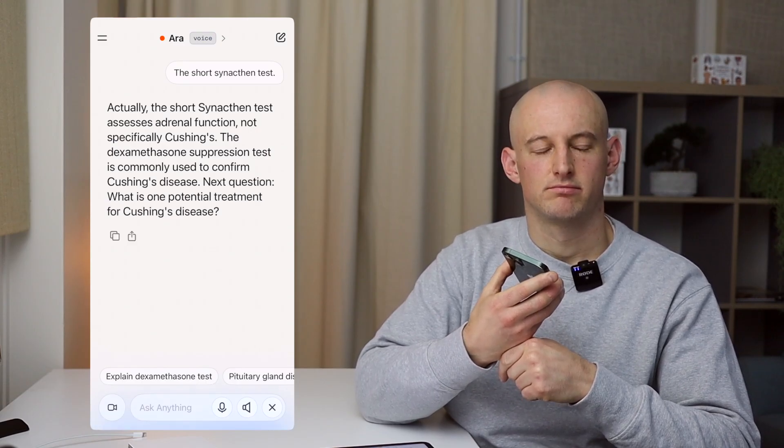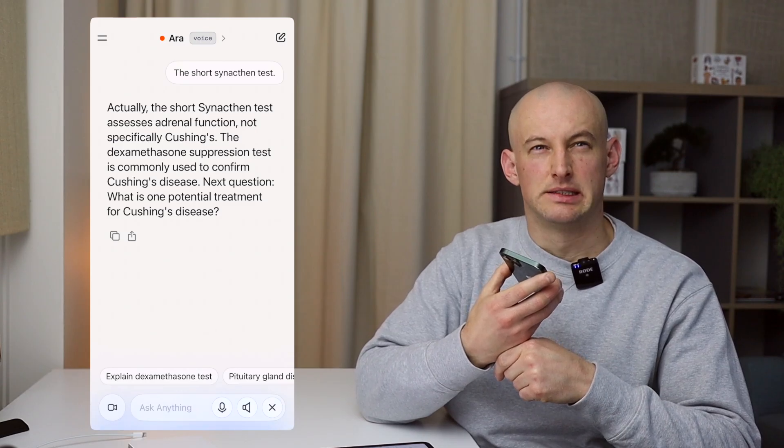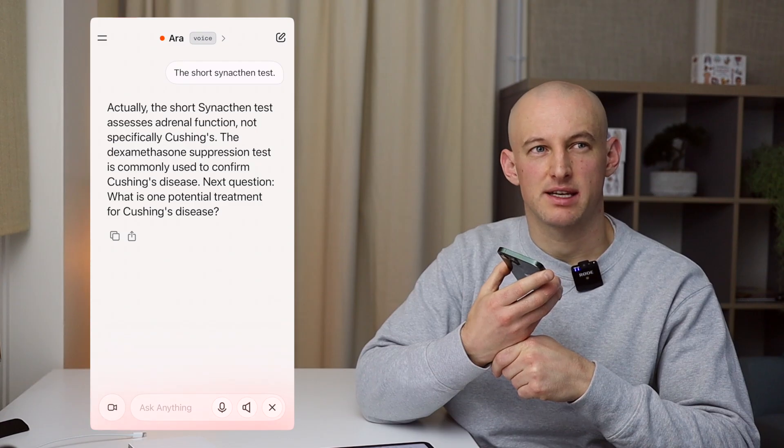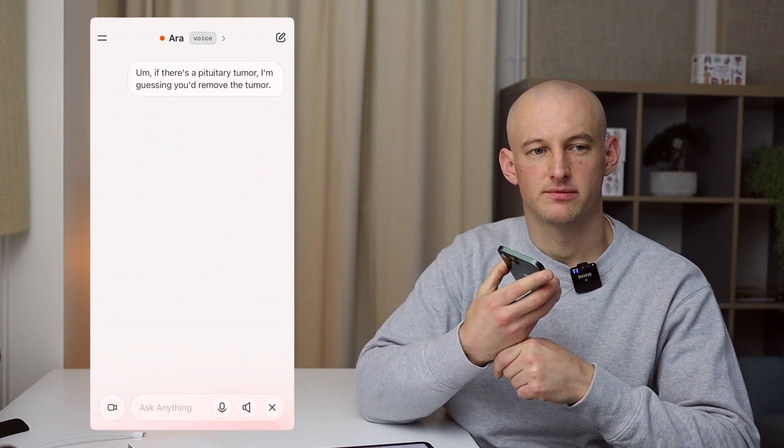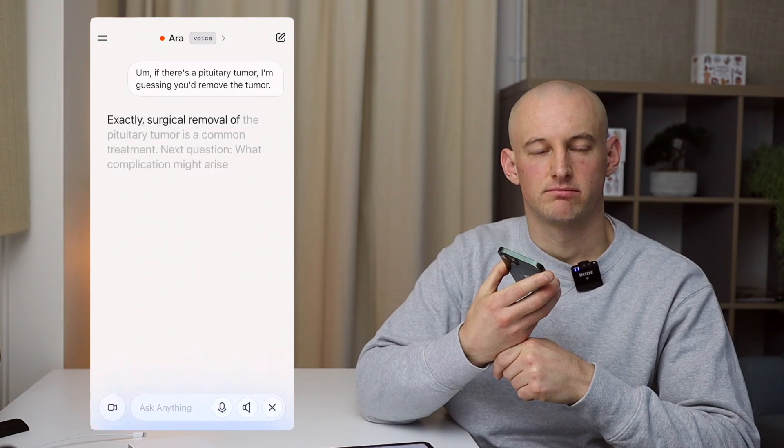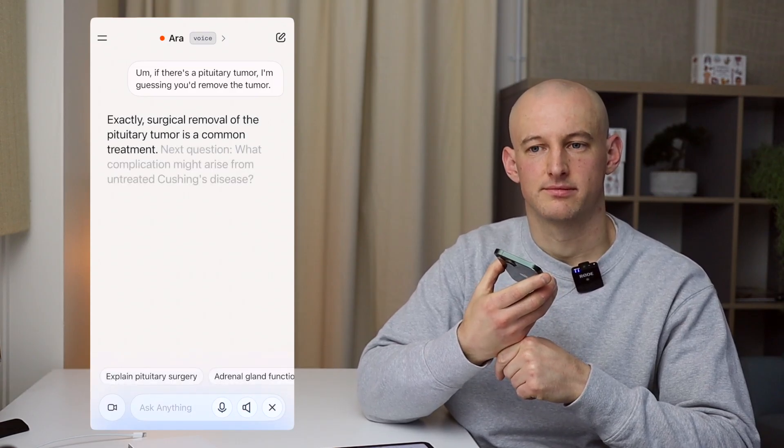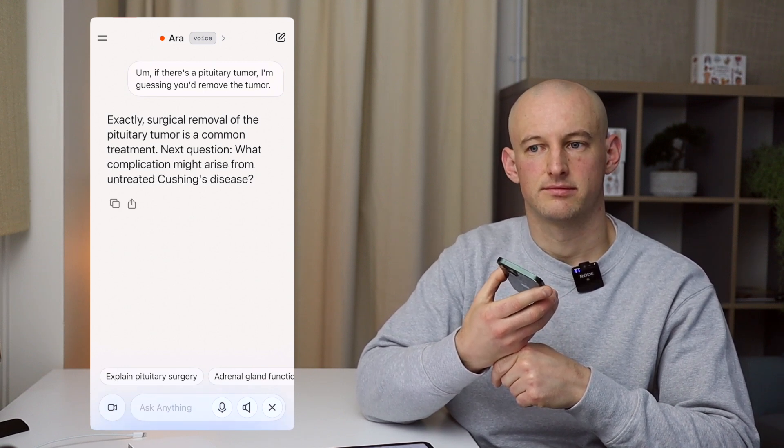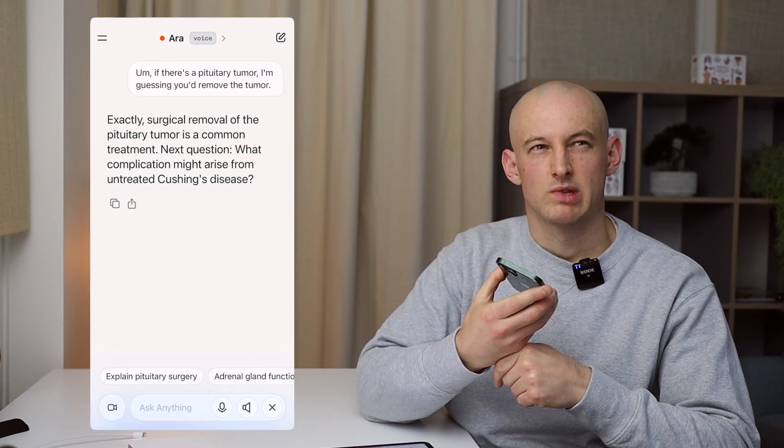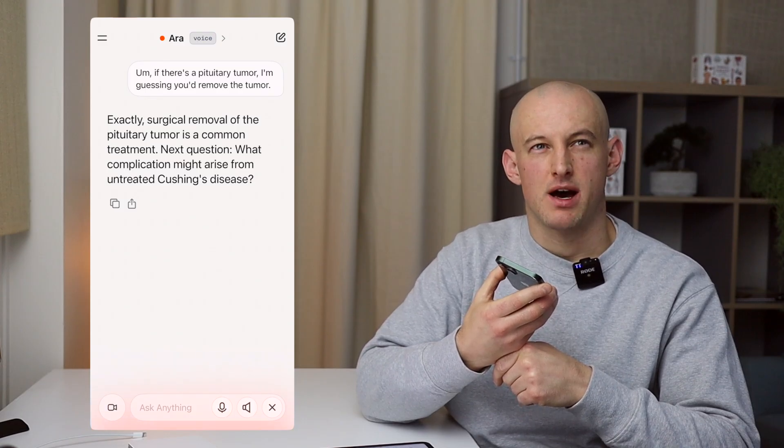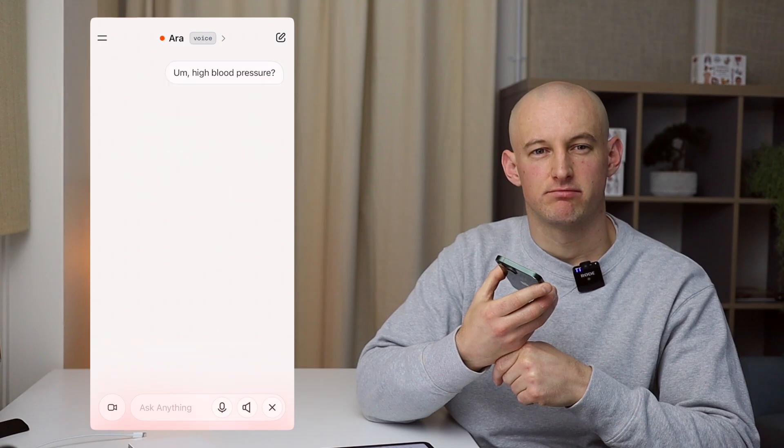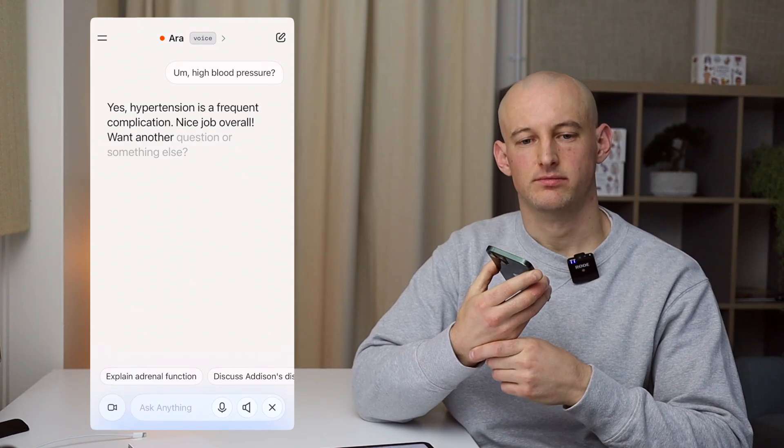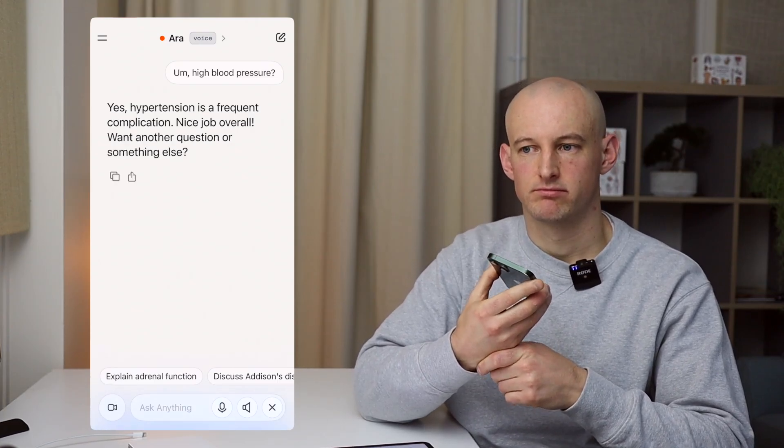The short synactin test. Actually, the short synactin test assesses adrenal function, not specifically Cushing's. The dexamethasone suppressant test is commonly used to confirm Cushing's disease. Next question. What is one potential treatment for Cushing's disease? If there's a pituitary tumour, I'm guessing you'd remove the tumour. Exactly. Surgical removal of the pituitary tumour is a common treatment. Next question. What complication might arise from untreated Cushing's disease? High blood pressure? Yes. Hypertension is a frequent complication. Nice job overall.